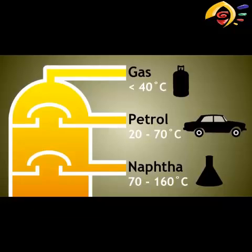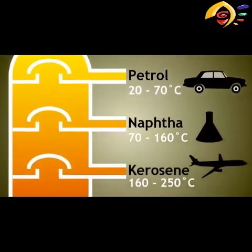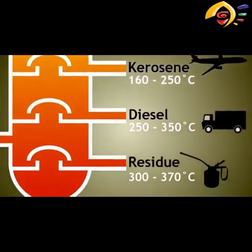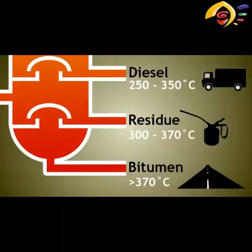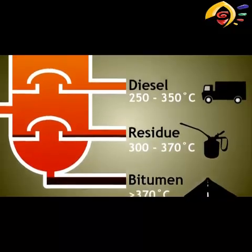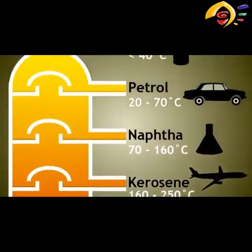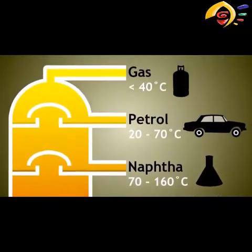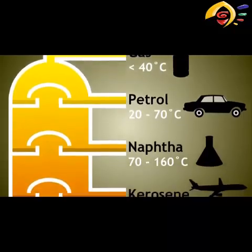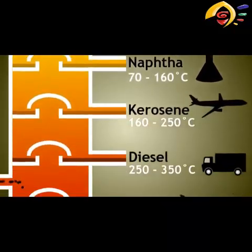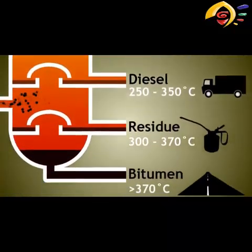As you are now aware, large hydrocarbons have higher boiling points and so are removed at the bottom of the fractionating column. Smaller molecules condense higher up the column. We will now take a look at some of the common fractions as we move down from the top of the fractionating column.